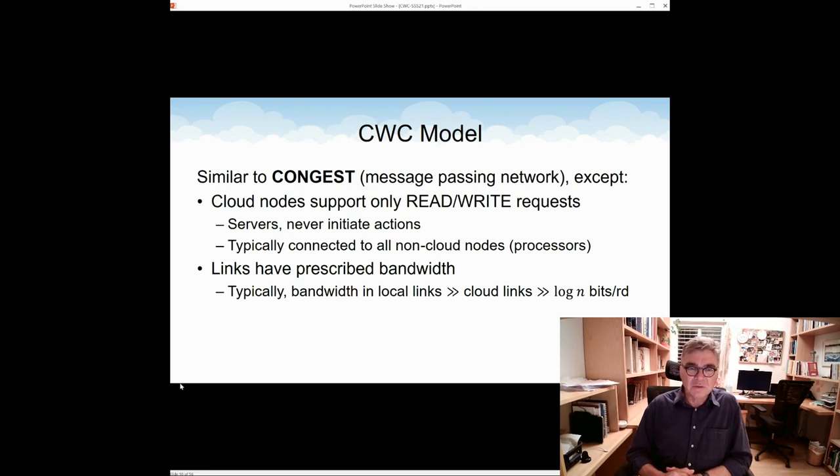Another important property of the CWC model is that we have a given bandwidth for each link. Well, in the congest model, we also had that. But in the congest model, the bandwidth was typically log n bits per round. Well, this makes sense. We argue that actually this number is outdated because today bandwidth is much more plentiful. And we usually think about the CWC model with bandwidths of links of bandwidth n to the epsilon for some positive constant epsilon. Another thing that we usually assume about link bandwidth is that the link connecting processors to processors usually have much higher bandwidth than links connecting processors to the cloud. So this is, you know, just some intuition about the CWC model.